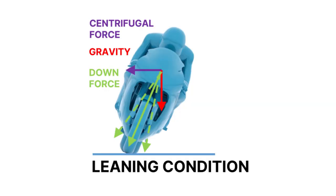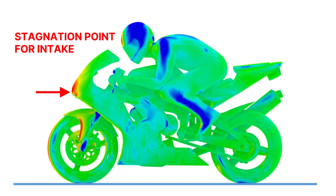Also, motorcycles lean and anything you do may not work favorably in the leaning condition. So traditionally, aerodynamics in motorcycles — not just racing, but production — was more about rider protection, rain, and dirt deposition. Engine cooling is always an issue. We have cases where we improve performance by cleaning up the intake flow into the engine and placing the intakes more in a stagnation point. These are important aspects, but they are not as dramatic as you can achieve in an actual race car.